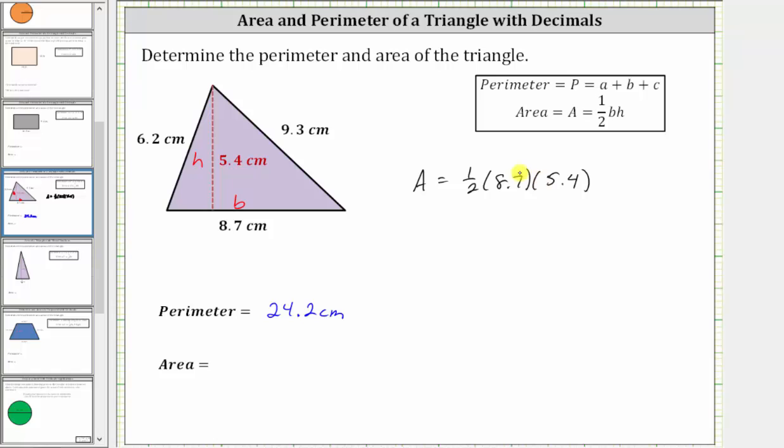This product will give us the number of square centimeters that will fit inside the triangle. To determine the product, let's first determine 1/2 times 8.7.